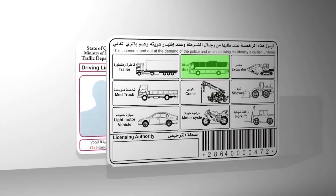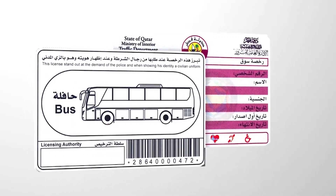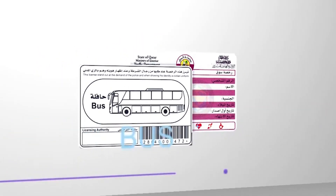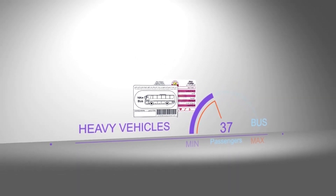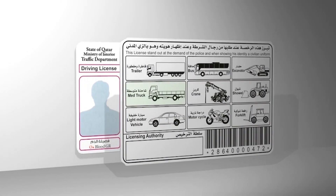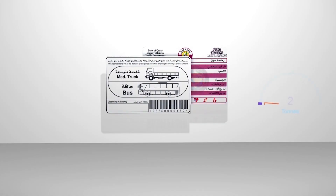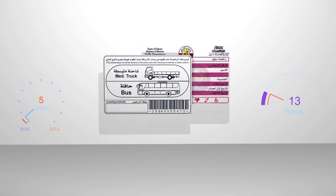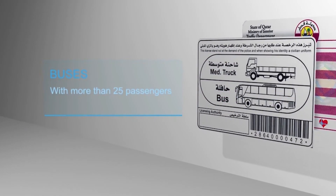Heavy Motor Vehicle Driving License. Bus: authorizes its holder to drive buses with a passenger capacity exceeding more than 25 passengers, including the driver. Med Truck: authorizes its holder to drive heavy motor vehicles of total weight that does not exceed 13 tons and not less than 5 tons, and buses with a capacity of more than 25 passengers.